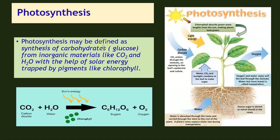Photosynthesis may be defined as the synthesis of carbohydrates — that is glucose — from inorganic materials like carbon dioxide and water, with the help of solar energy trapped by pigments like chlorophyll. The familiar equation is: carbon dioxide plus water, in the presence of sunlight and chlorophyll, gives us sugars and oxygen. Photosynthesis is the only process on earth by which solar energy is trapped by green plants and converted into food. This process is unique to green plants and is the final light-energy-trapping process on which all life ultimately depends.